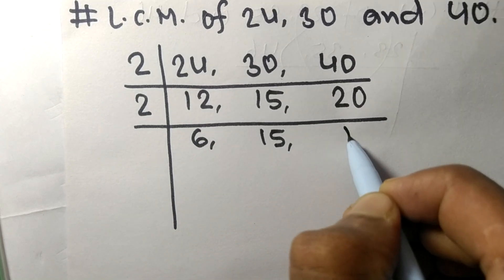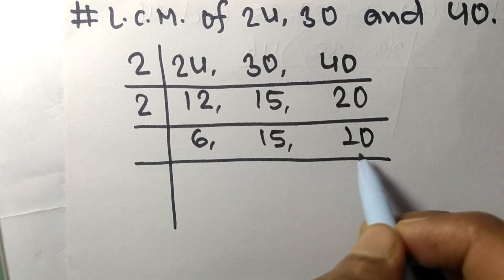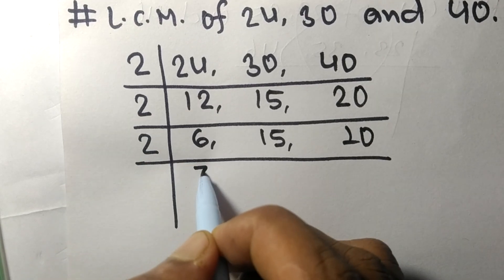Again, 6 and 10 are divisible by 2. 2 times 3 means 6, 15 is not divisible so it stays the same, 2 times 5 means 10.